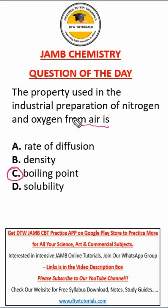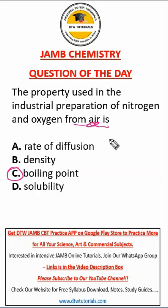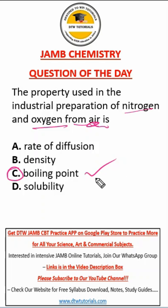The industrial preparation of nitrogen and oxygen from air — the process is known as fractional distillation of air, where air is liquefied and then fractionally distilled to separate its components based on the boiling point of each of the components. So the property used in this particular industrial preparation is boiling point. This is our right answer.